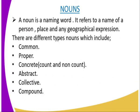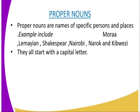We'll begin by defining what a noun is. A noun is a naming word — it refers to the name of a person, a place, and any geographical expression. We have different types of nouns, which include common nouns, proper nouns, concrete nouns (which include count and non-count), abstract nouns, collective nouns, and compound nouns.